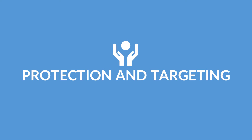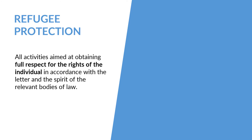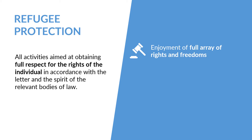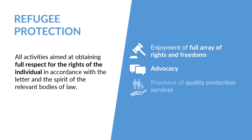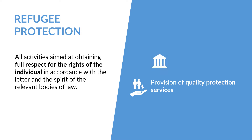Protection and targeting. Refugee protection is defined as all activities aimed at obtaining full respect for the rights of the individual in accordance with the letter and the spirit of the relevant bodies of law. For humanitarian actors, this encompasses three key areas: ensuring refugees enjoy a full array of rights and freedoms, to advocate and intercede on risks such as the danger of forcible return or arbitrary detention, and the provision of quality protection services such as legal aid, registration, or humanitarian assistance.